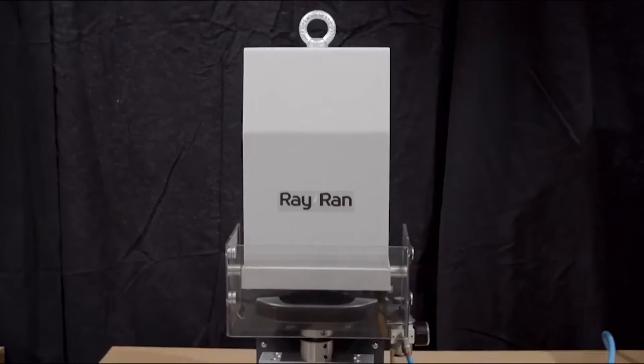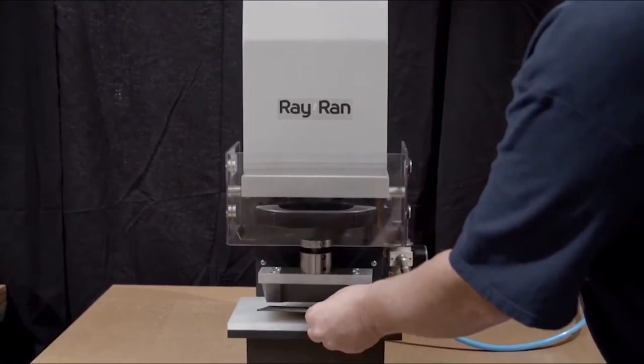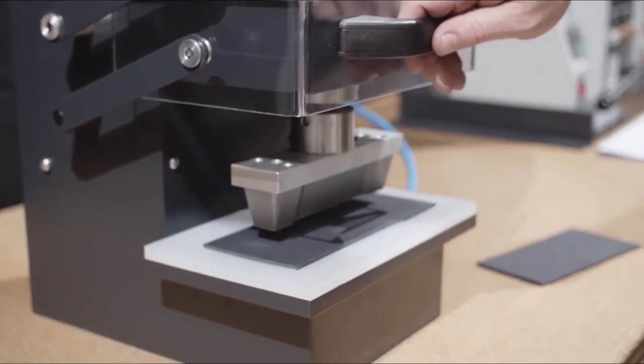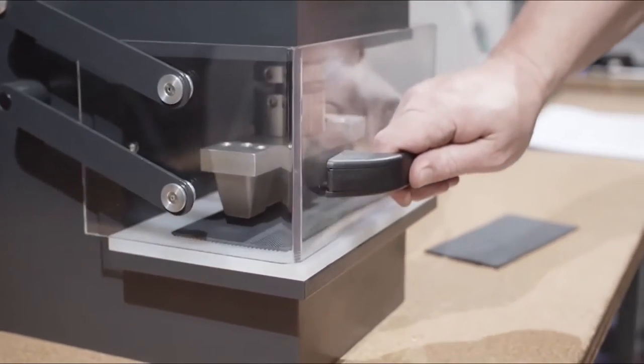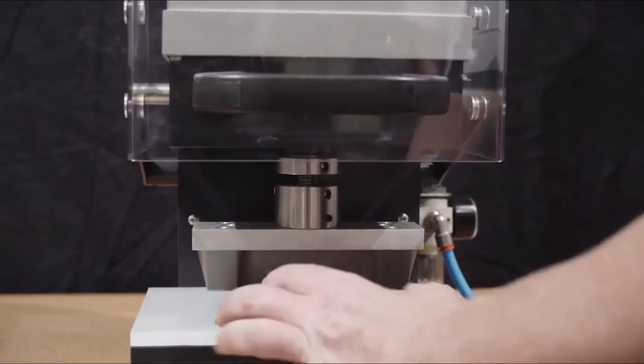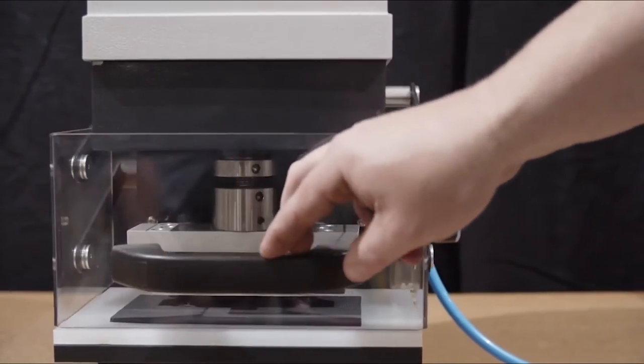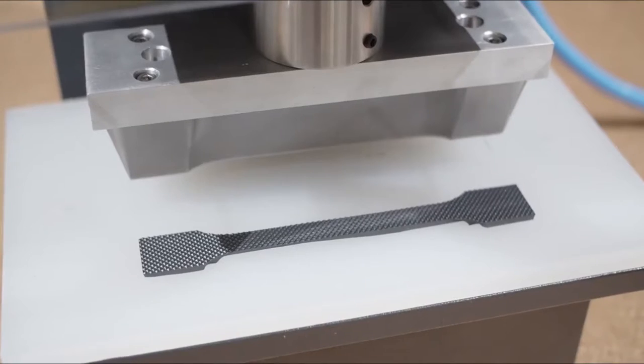On display at the lab is the pneumatically operated cutting press. Providing an easy and safe way to cut samples, it generates a cutting force of up to 50 kilonewtons to cut materials up to 8 millimeters thick. Cutting dies are interchangeable and easy to switch out. Custom dies can also be fabricated to meet your specific needs.